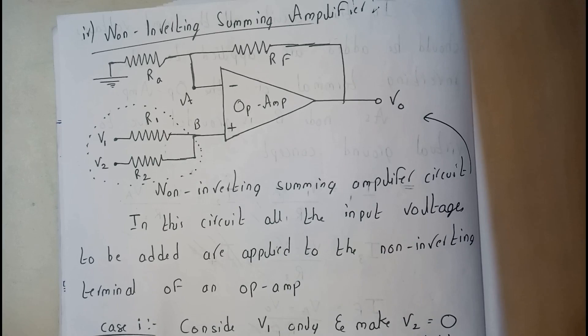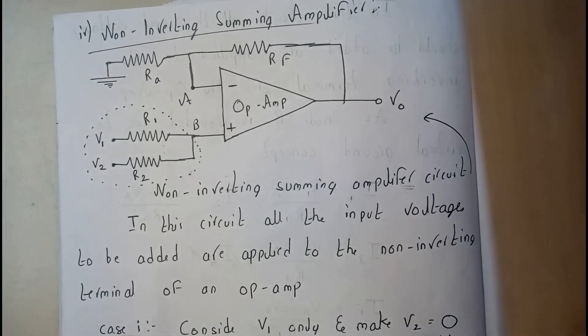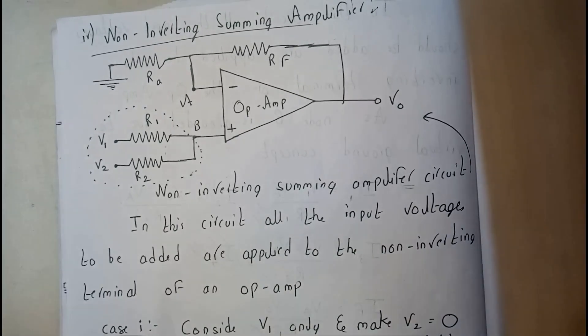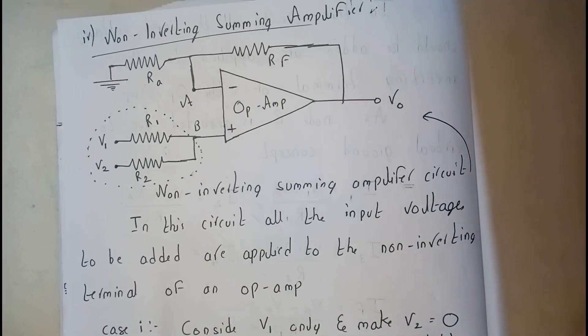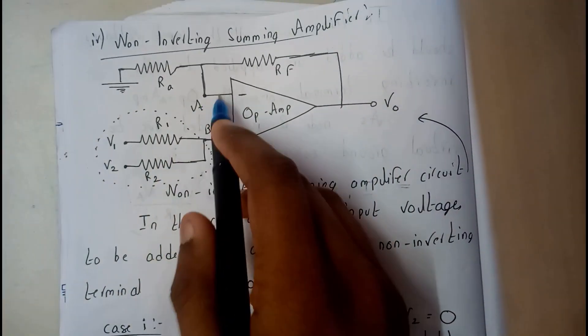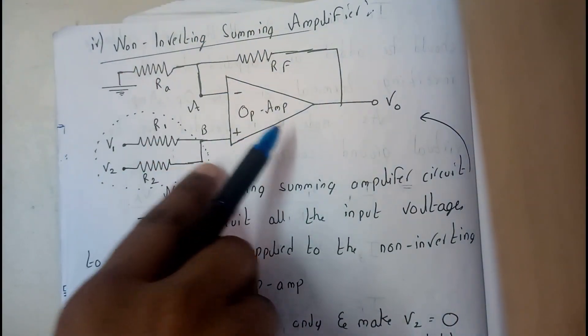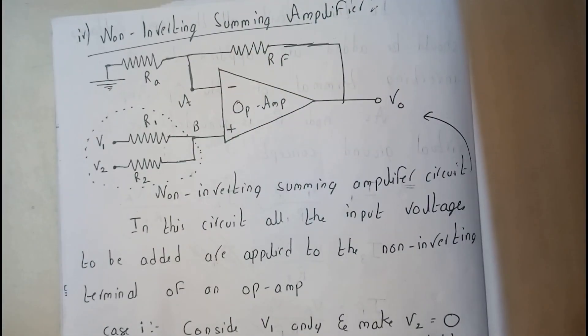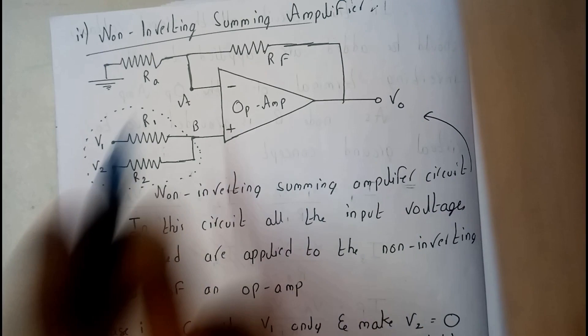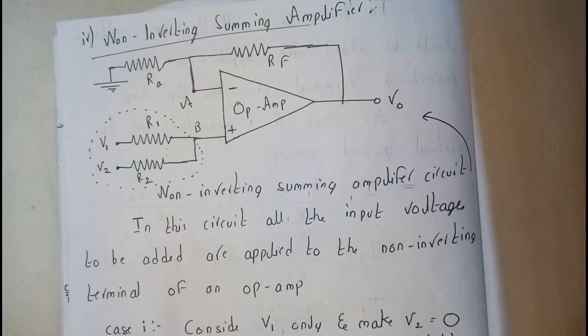So basically this is a non-inverting summing amplifier. From the name itself you can say that you are going to ground the inverting terminal. So these both are going to be in virtual ground. In one case the upper one will be grounded, in the second case the lower one will be grounded. In this it is particularly non-inverted, so let's go through the diagram.